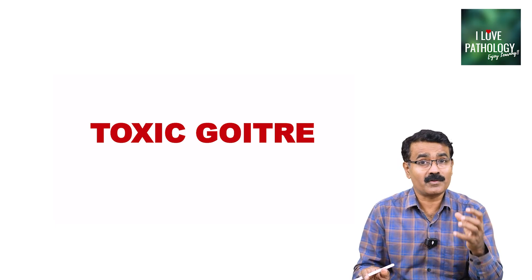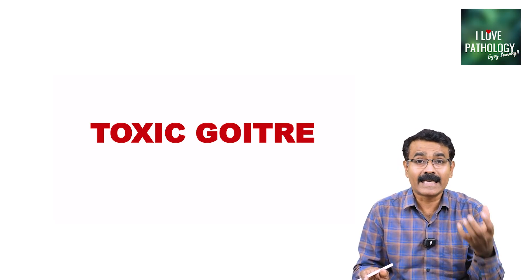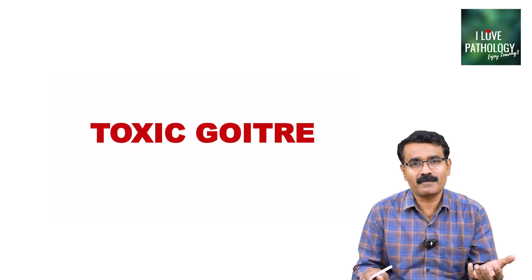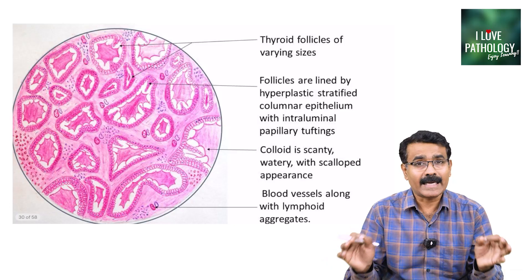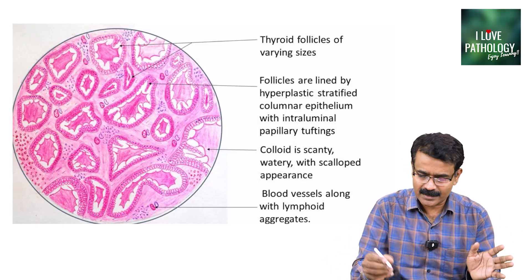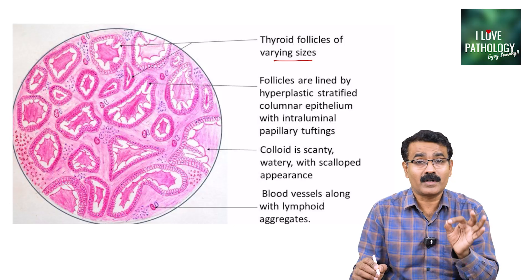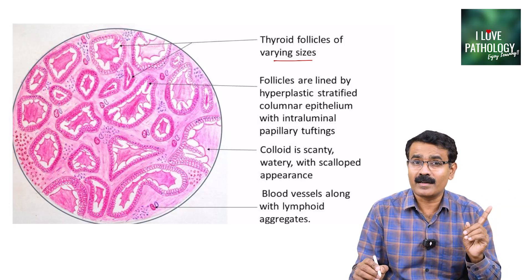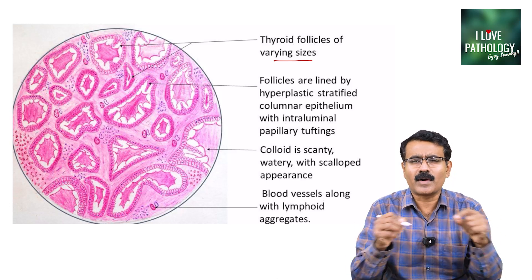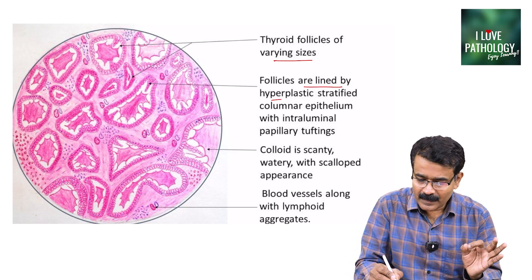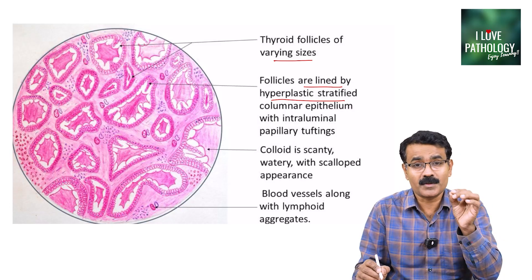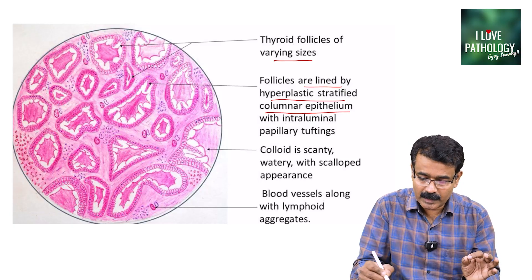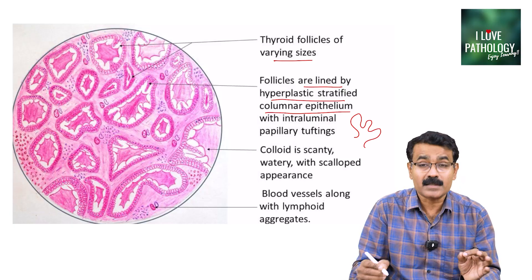Toxic goiter — as in Graves disease, which is an autoimmune disease — shows thyroid follicles of varying sizes. The most important difference from colloid goiter is that the follicles are lined by hyperplastic epithelium with increased cell layers — hyperplastic stratified columnar epithelium. Sometimes you can also find intraluminal papillary infoldings due to hyperplasia, with papillary tufting of the epithelium into the lumen.